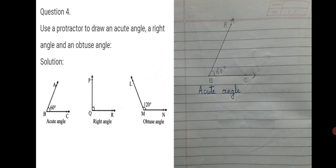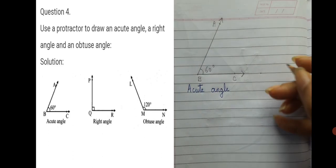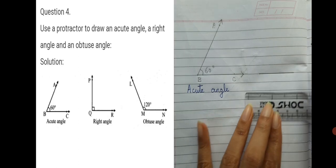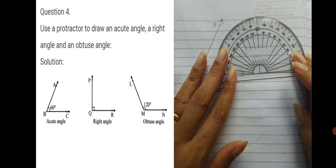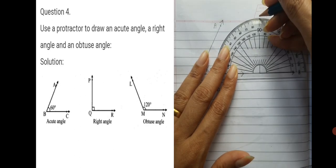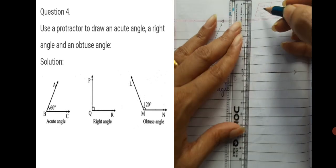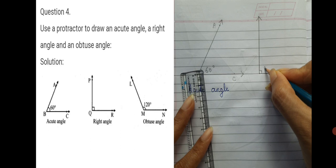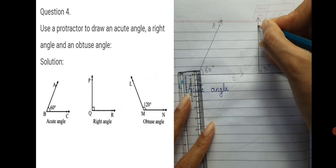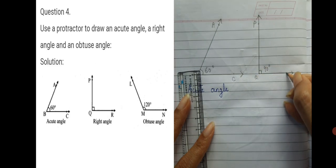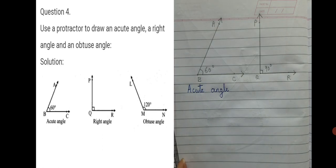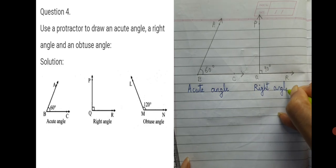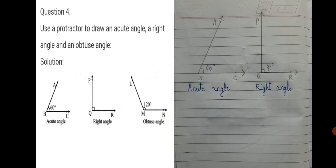For the right angle, take point Q and mark one ray as the base arm with an arrowhead. Keep the protractor center exactly at Q and mark 90 degree on top, then join it to Q to form the right angle. Mark the arrowhead and name the angle. The perpendicular sign shows 90 degree. Name the angle PQR — angle PQR is 90 degree and is called a right angle. You can draw acute, right, or obtuse angles with a scale and protractor.